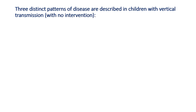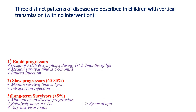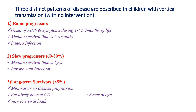Three distinct patterns of disease are described in children with vertical transmission without intervention. The first is rapid progressors, where onset of AIDS occurs within the first two to three months of life and median survival time is six to nine months — most are in-utero infected. The second is slow progressors, which is 60–80% and the most common type, with a median survival time of around six years, and transmission most often occurring during labor and delivery. Long-term survivors account for less than 5%, with minimal or no disease progression, relatively normal CD4 count, and very low viral loads.